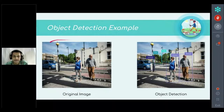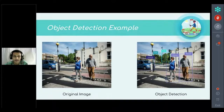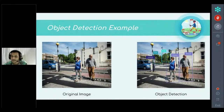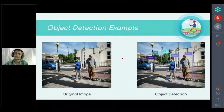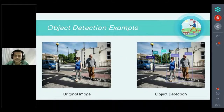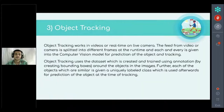Here is an example: in this original image there is one person, another person, a car, and some trees. If we create a dataset with bounding boxes and annotations for cars, trees, and humans, the output image will show vehicle detection, tree detection, and person detection — multiple objects detected at once, making it more efficient than image classification.